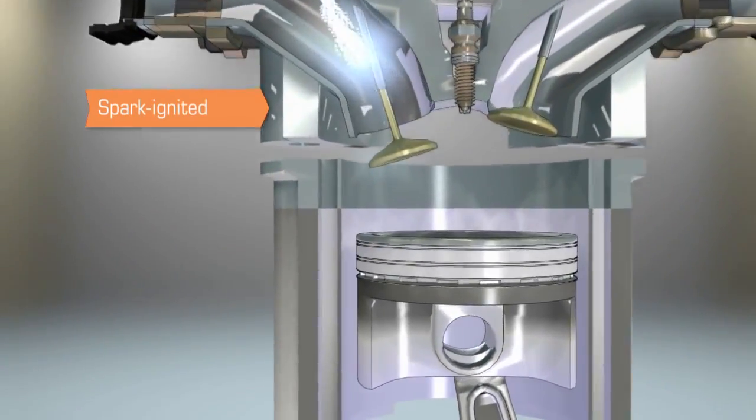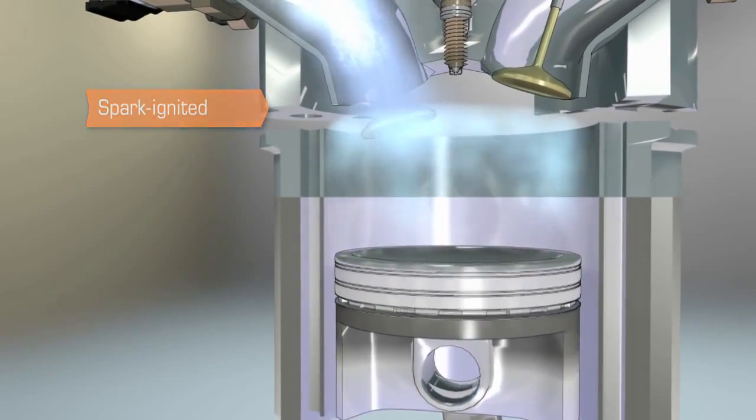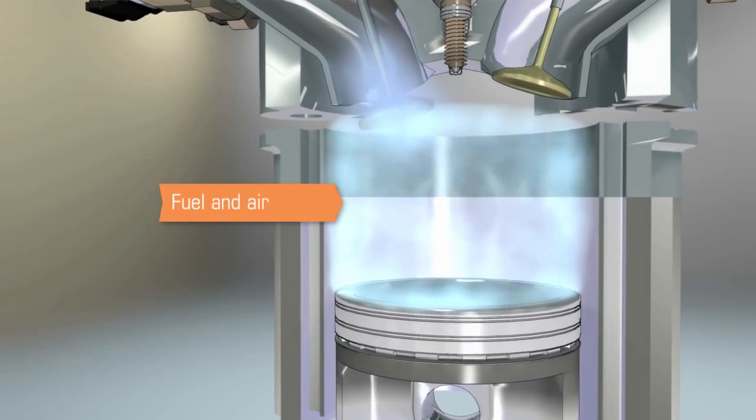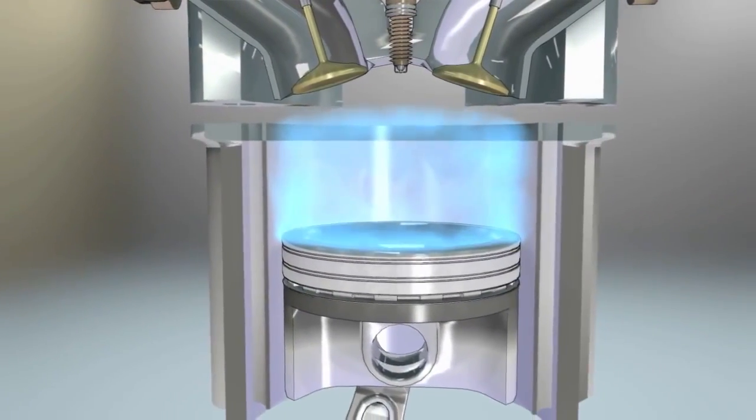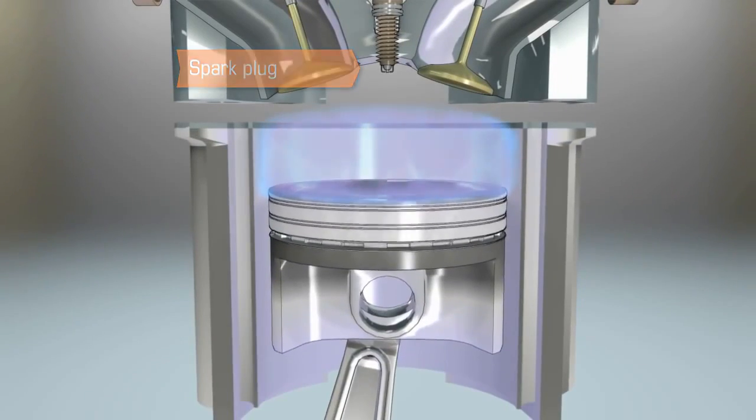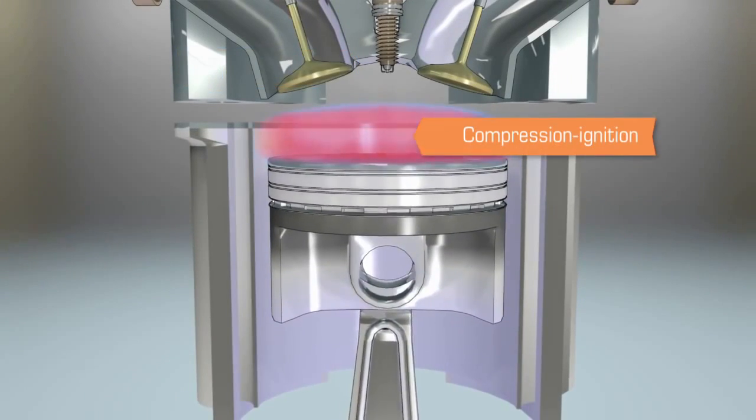Gasoline engines are often called spark ignited engines. In these engines, a mixture of fuel and air is normally premixed in the intake system before entering the combustion chamber. A spark plug is then used to time the combustion for optimal performance.